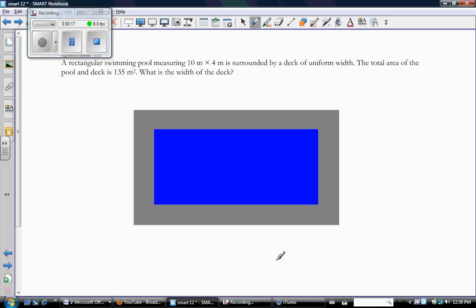So let's go look at that question. It says, a rectangular swimming pool measuring 10 by 4 is surrounded by a deck of uniform width. The total area of the pool and deck is 135 square meters. What is the width of the deck?